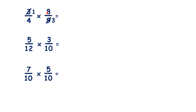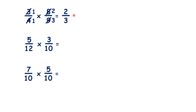4 and 8 are both in the 4 times table. So 4 divided by 4 is 1, and 8 divided by 4 is 2. So now we have 1 times 2 over 1 times 3, so our answer is 2 thirds.